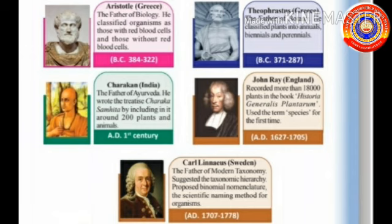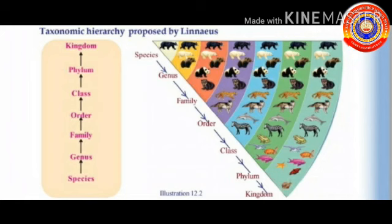Next, Carl Linnaeus. He is from Sweden. He is known as the father of modern taxonomy. He suggested the taxonomic hierarchy and proposed binomial nomenclature, which is the scientific naming method for organisms. Now we have to study about the taxonomic hierarchy — it was proposed by Linnaeus.